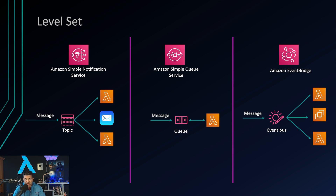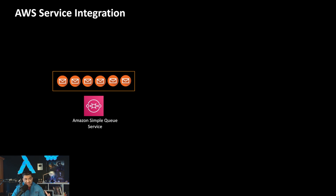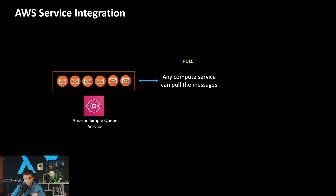The important thing to remember is SNS is a push mechanism, SQS is a pull mechanism, and EventBridge is a push mechanism. When we talk about Amazon SQS, there is a queue with messages - it's a pull mechanism. Any compute service can pull the messages; SQS is not pushing the messages to AWS services.